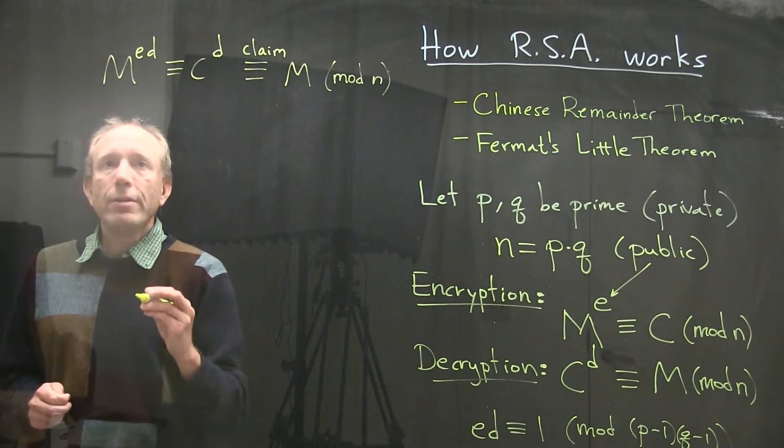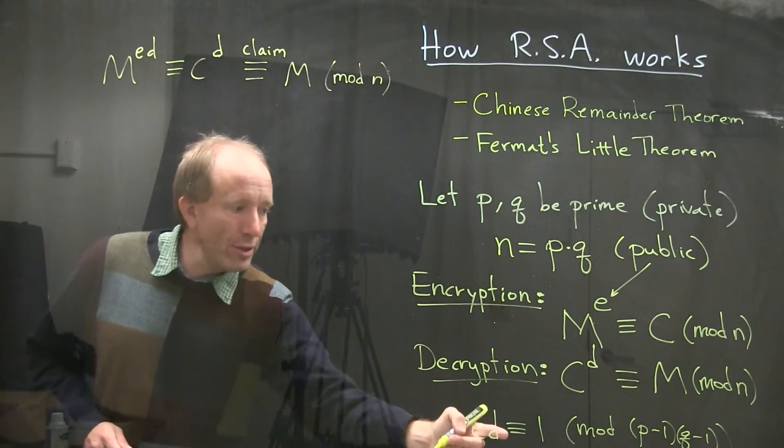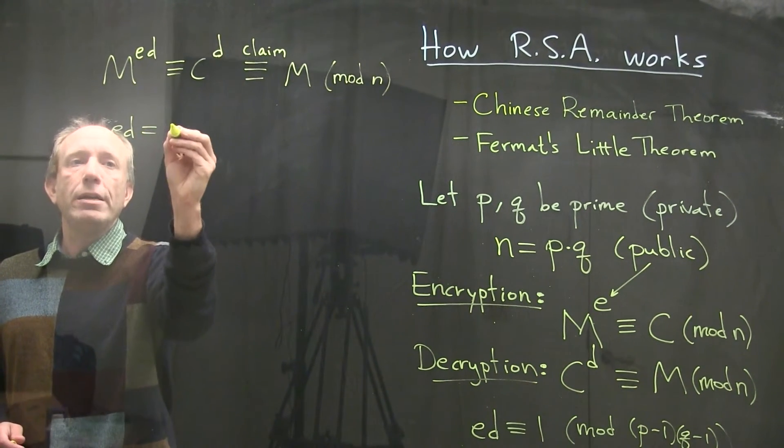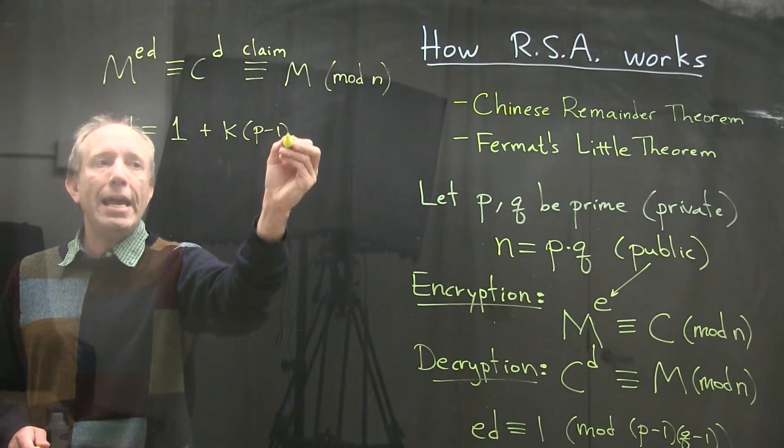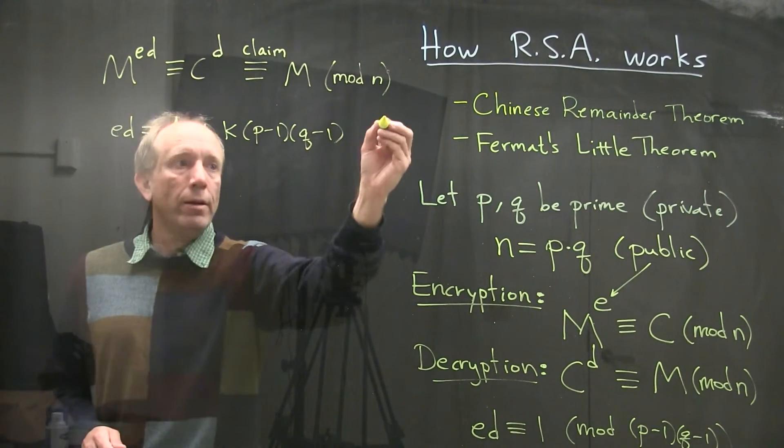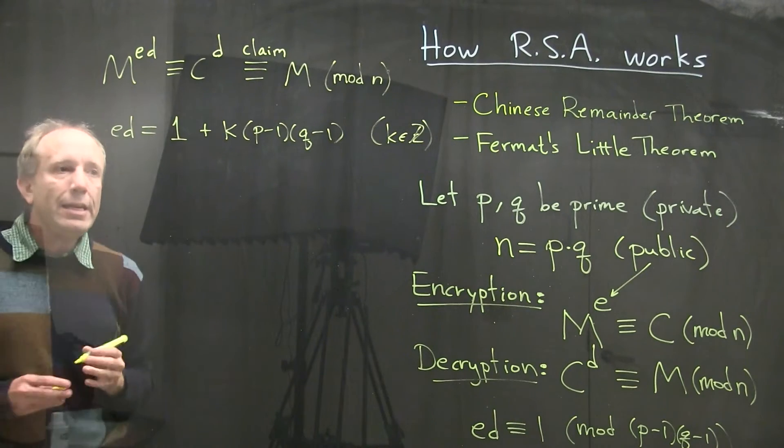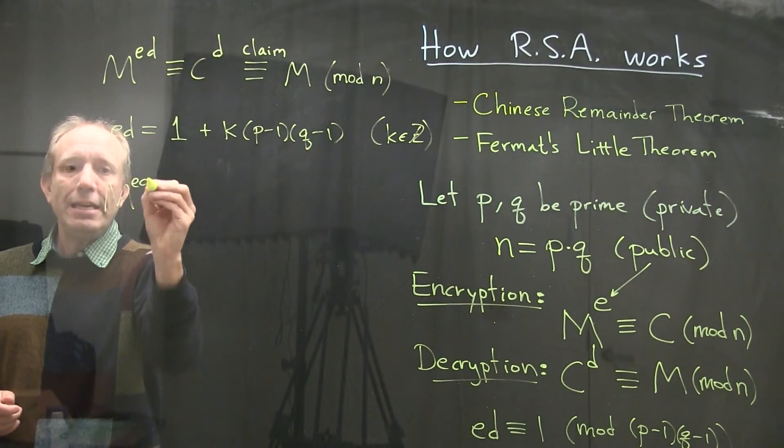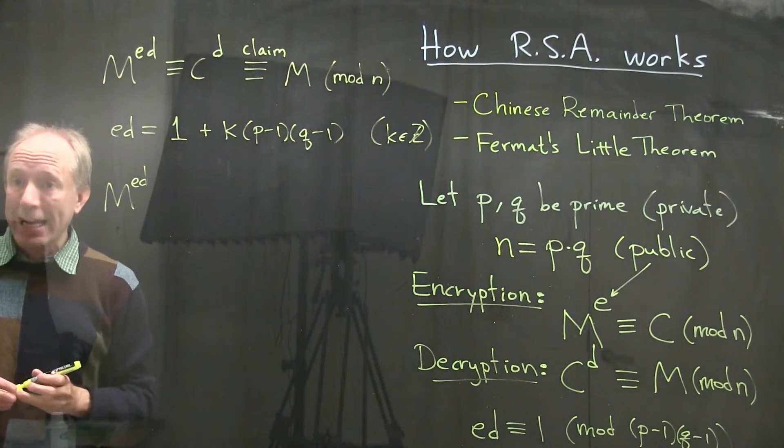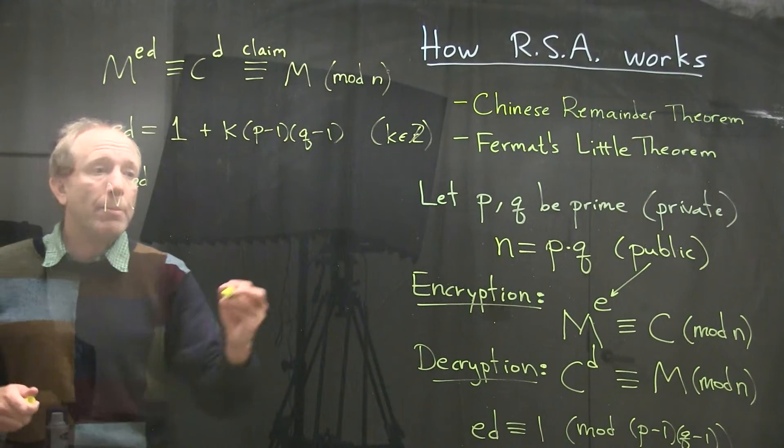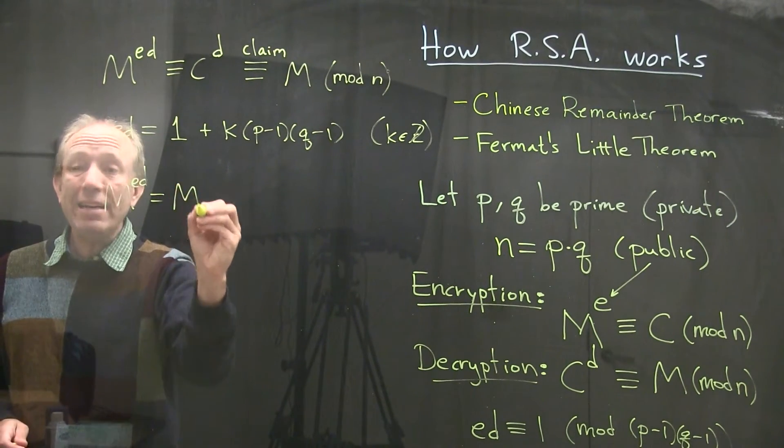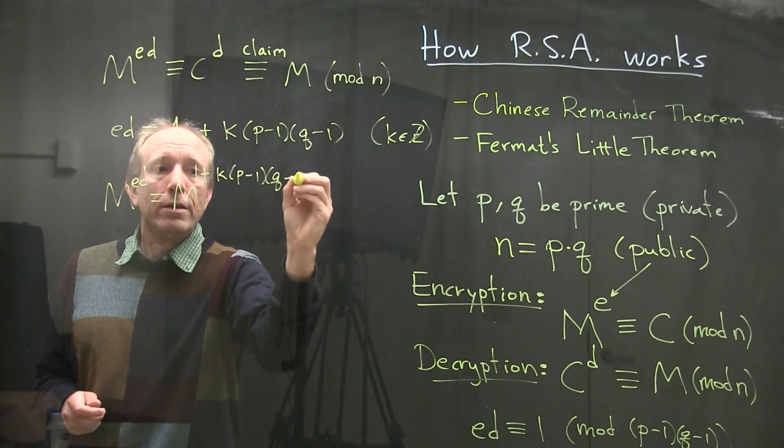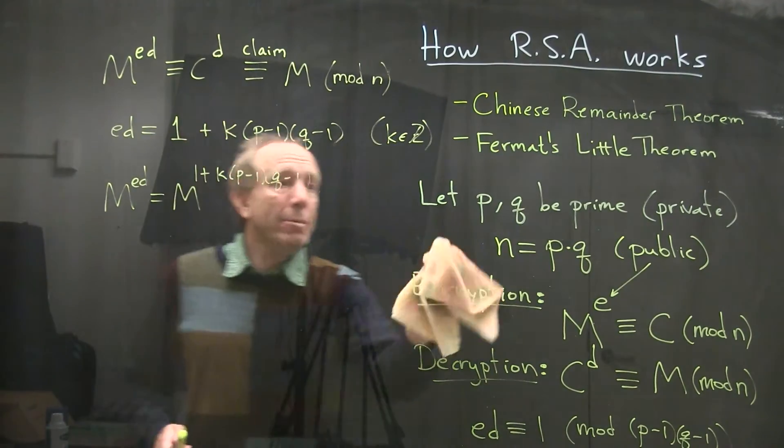Well, the point is that since ED is congruent to 1 modulo P minus 1 times Q minus 1, that actually means that ED can be written as one more than some multiple, I'll call it K, of the product P minus 1 times Q minus 1. This is for some integer K. So ED can be written in that form. So when I now calculate M to the ED, I would like to understand why does that give me M again? Why does that get me back to the original message? Well, I'm going to actually first calculate this in mod P and in mod Q separately.